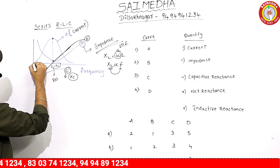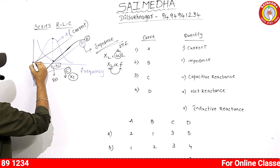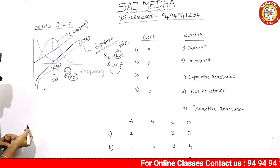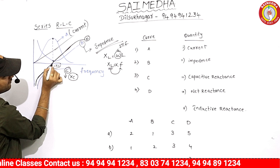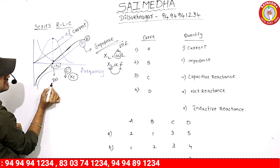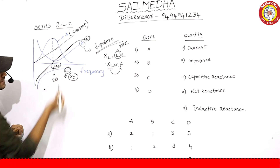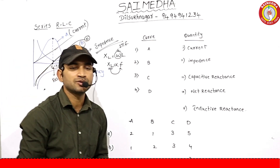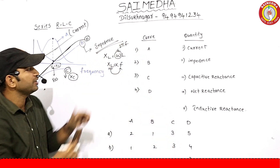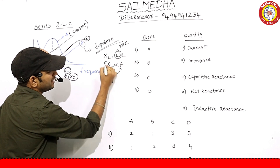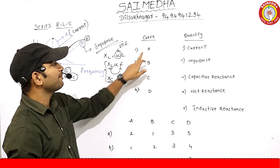The inductive reactance curve forms a straight line, since frequency increase causes inductive reactance to increase proportionally. The curve D indicates net reactance: at the point where XL equals XC, the net reactance value becomes zero.